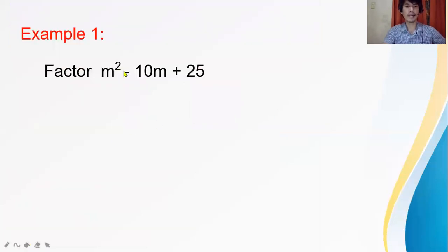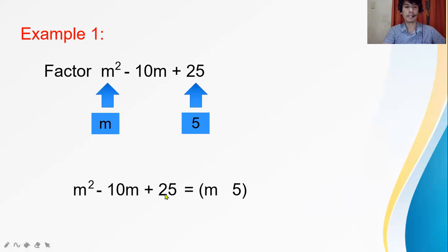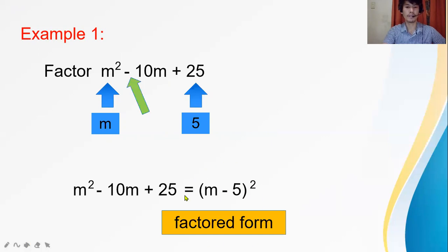Example 1: factor m squared minus 10m plus 25. The first and last terms, m squared and 25, are perfect squares. The square root of m squared is m, and the square root of 25 is 5. The middle term is negative 10m, so copy the negative sign. Then square the binomial. Therefore, the factored form is (m minus 5) squared.